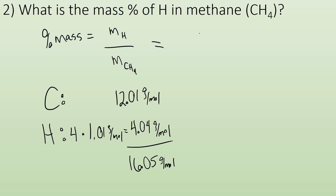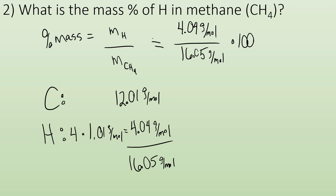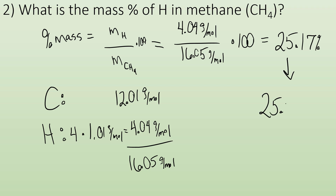For the percent of hydrogen: the mass from all the hydrogen is 4.04 grams per mole, divided by the whole thing, 16.05 grams per mole, times 100. You get 25.17%, but rounding to the proper number of sig figs gives 25.2%.